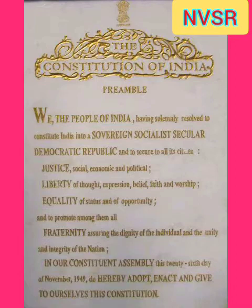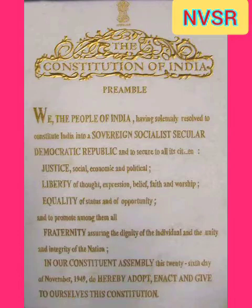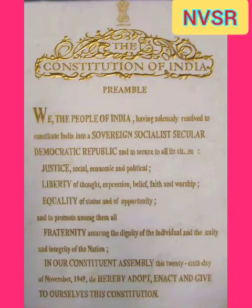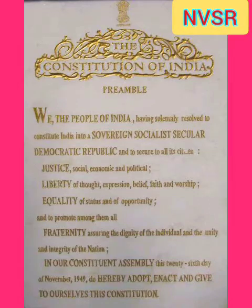In indirect democracy, on the other hand, the representatives elected by the people exercise the supreme power and thus carry on the government and make the laws. This type of democracy is also known as representative democracy. It is of two kinds: parliamentary and presidential. The Indian Constitution provides a representative parliamentary democracy under which the executive is responsible to the legislature for all its policies and actions. Universal adult franchise, periodic elections, rule of law, independence of judiciary, and absence of discrimination on certain grounds are the manifestations of the democratic character of the Indian polity.